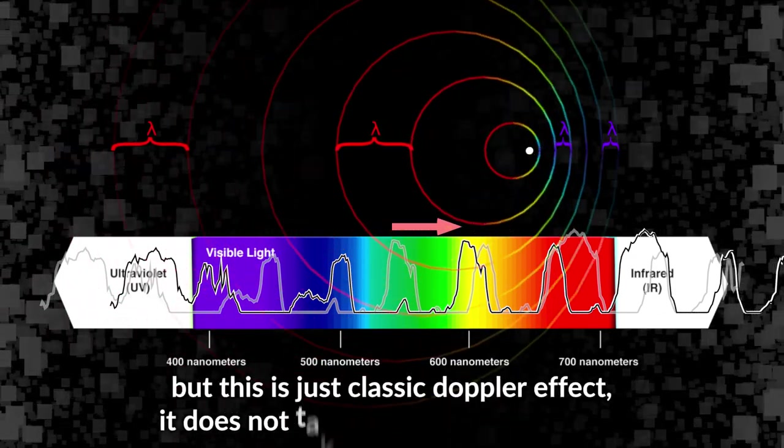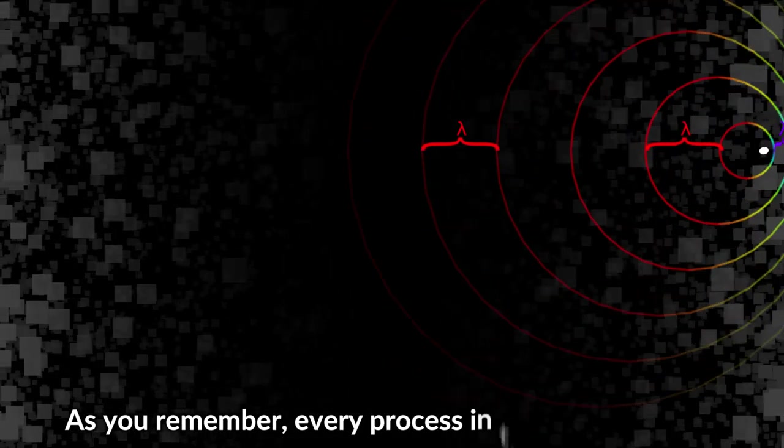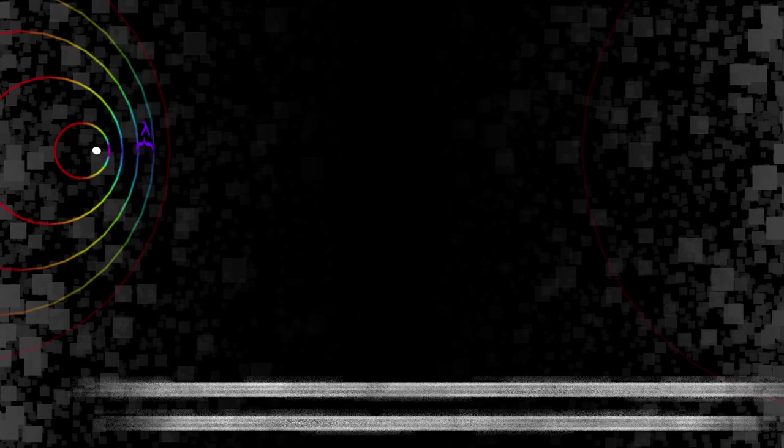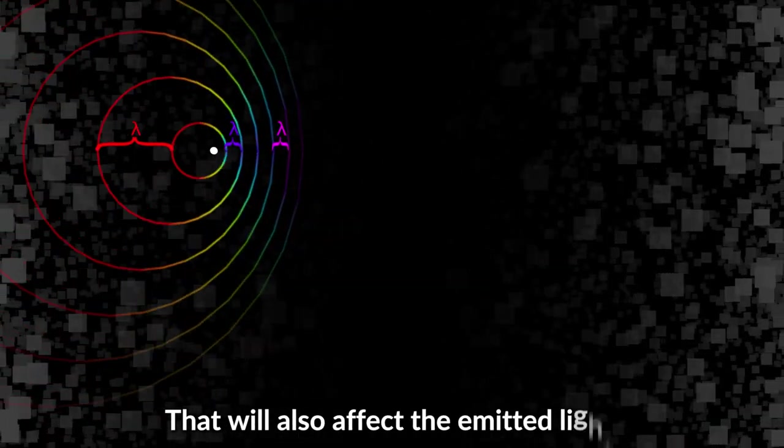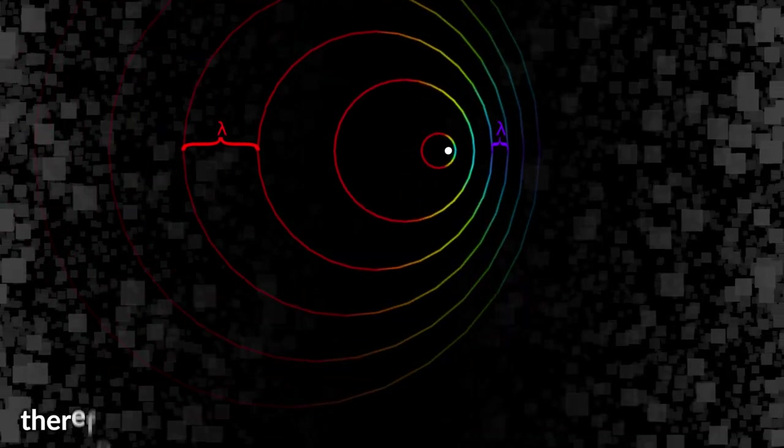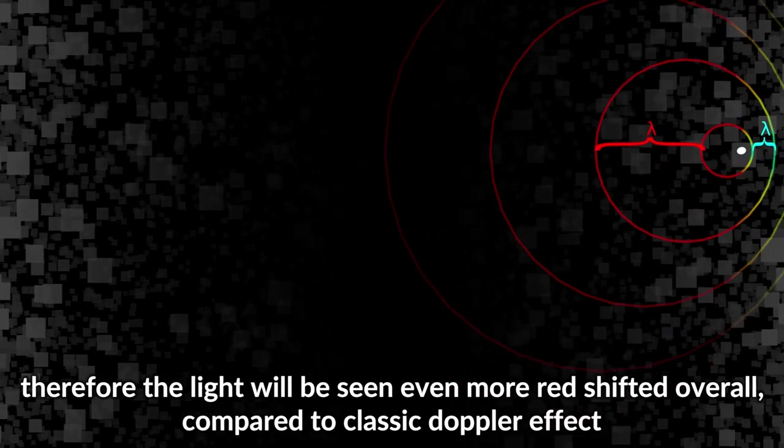But this is just classic Doppler effect - it does not take relativity into account. As you remember, every process in the moving object is observed to happen slower by a static observer. That will also affect the emitted light, so the time between emission of each circle will be longer, therefore the light will be seen even more red-shifted overall compared to classic Doppler effect.